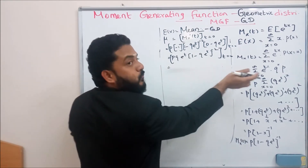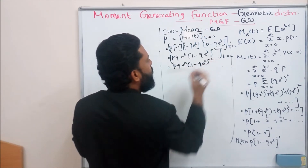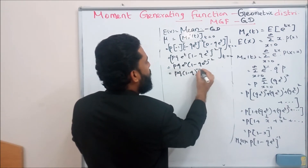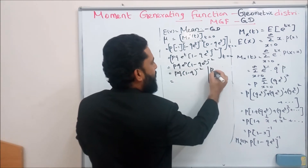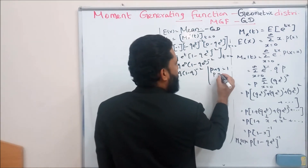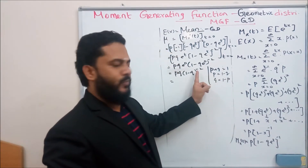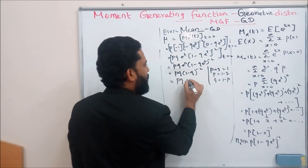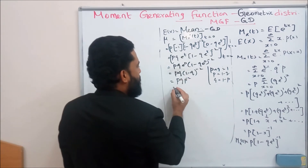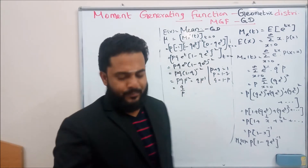Putting t=0: p * q * e^0 * (1 - q*e^0)^(-2) = p * q * (1 - q)^(-2). Since p + q = 1, we have 1 - q = p. So this becomes p * q * p^(-2) = q * p^(-1) = q/p. Therefore, the mean of the geometric distribution is q/p.